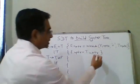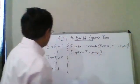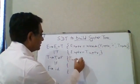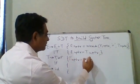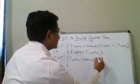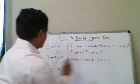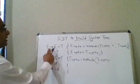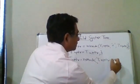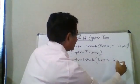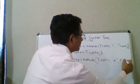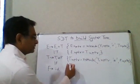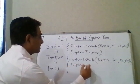For T → T1 star F, T dot nptr equals make_node with T1 dot nptr, the star operator, and F dot nptr. For T → F, T dot nptr equals F dot nptr. We use names T1 and E1 to disambiguate where both T and E appear in the same production.